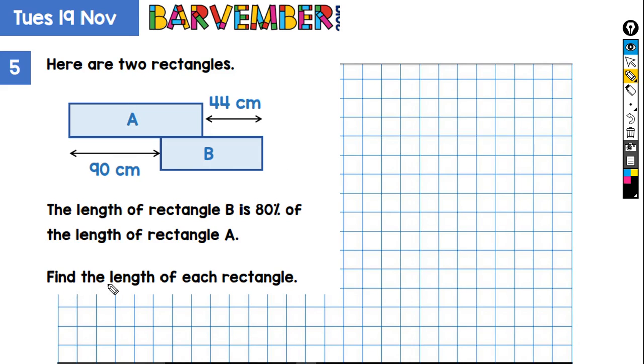We're asked to find the length of each rectangle. So we have rectangle A and it's sort of overlapping at one edge with B, and we're given these two dimensions. This space here is 44 centimeters and the space left here is 90 centimeters.